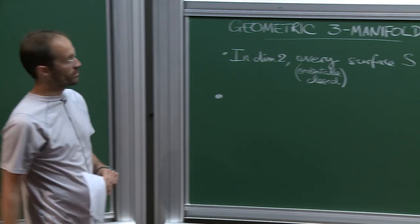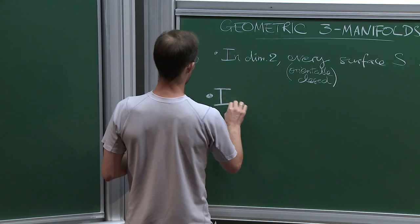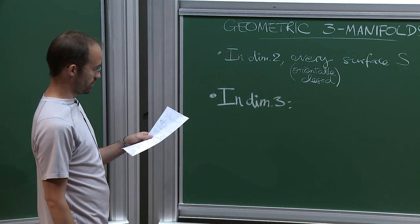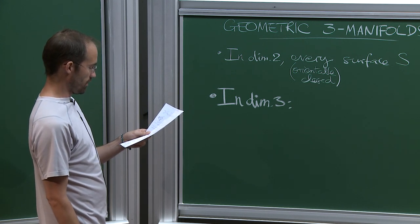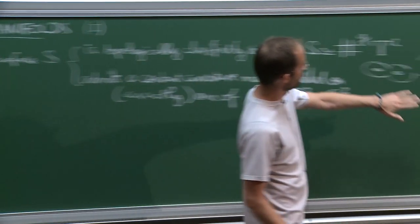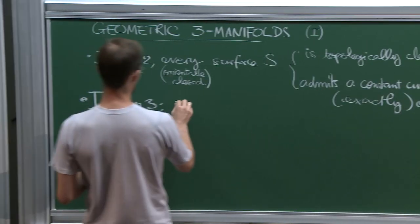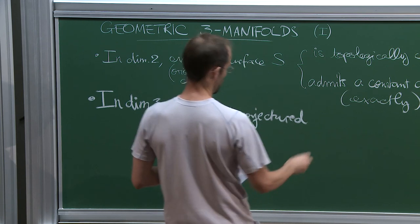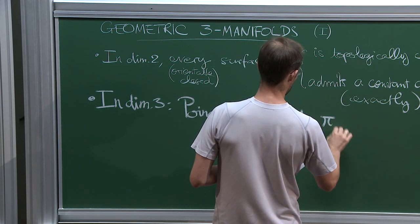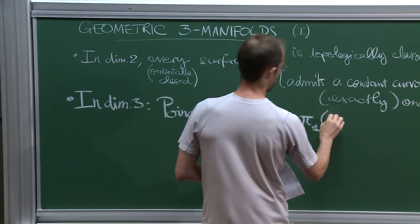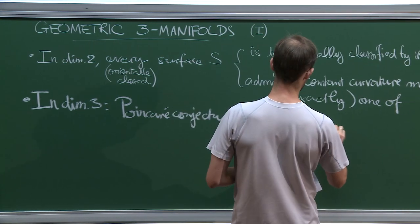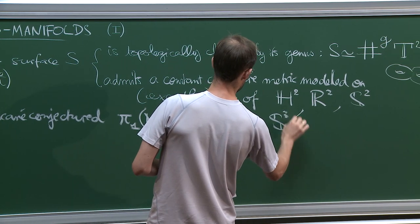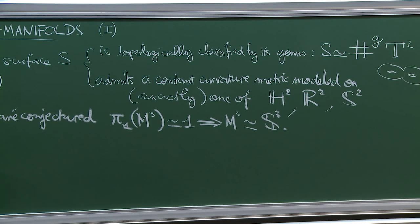So the subject of this talk is what can we say in this direction about dimension 3. And of course, it's much harder. First, there is no such topological classification, not nearly. But Poincaré still ventured a kind of a claim in this direction. So that's called the Poincaré conjecture. That if the fundamental group of your three manifolds, so I'm not going to call it S now, but M, as in manifold M3 for the dimension, is trivial, then M3 has to be homeomorphic to the 3-sphere.